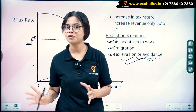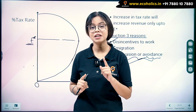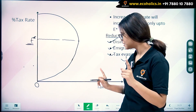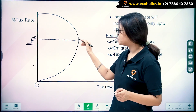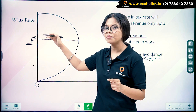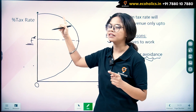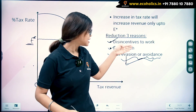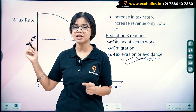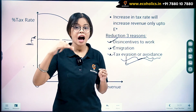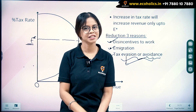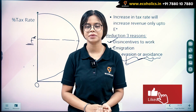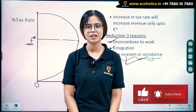So this is what the Laffer Curve means. It describes the relationship between tax rate and tax revenue. Beyond a certain point, the government cannot keep increasing the tax rate, because it will disincentivize people to work. These are the three reasons why a higher tax rate will not always yield higher tax revenue. I hope the concept is clear. I'll see you next time — please like, share, comment, and subscribe to our channel Ecoholics.